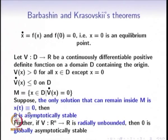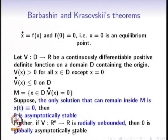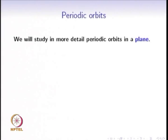If V is additionally radially unbounded, then the origin is globally asymptotically stable. For the pendulum, global asymptotic stability fails because there are other equilibrium points, and one can check that the energy Lyapunov function used there is not radially unbounded — which is consistent with the origin not being globally asymptotically stable.